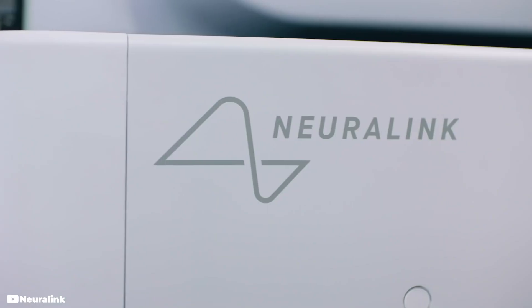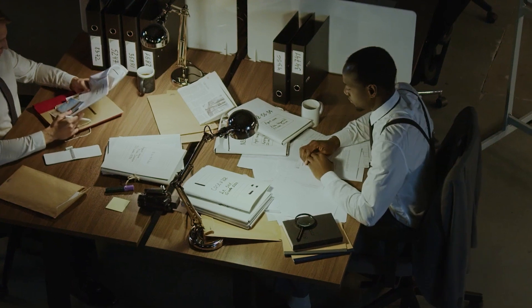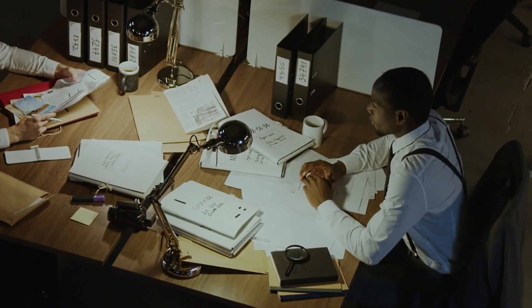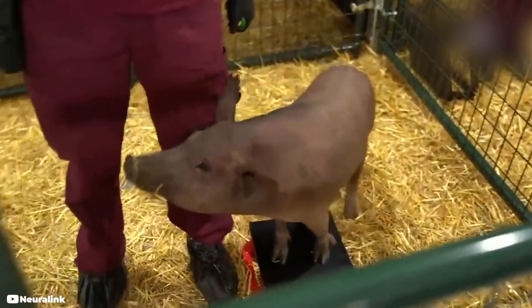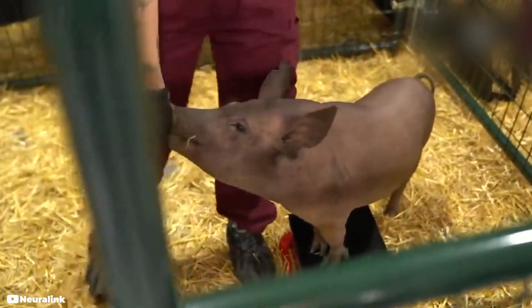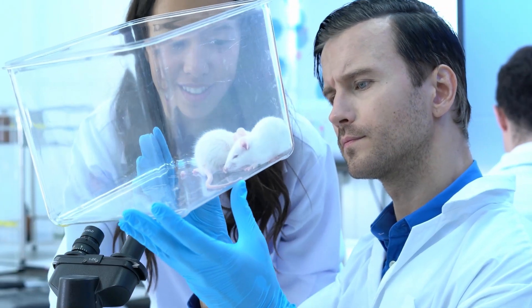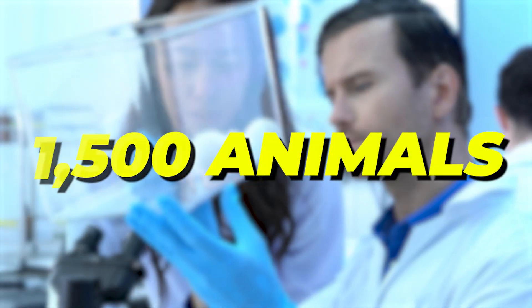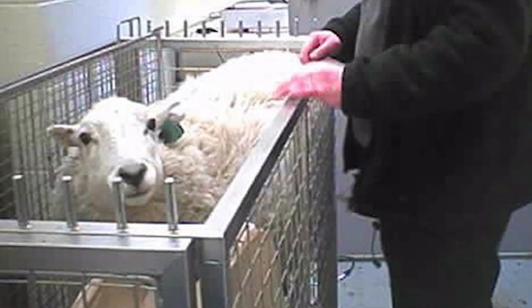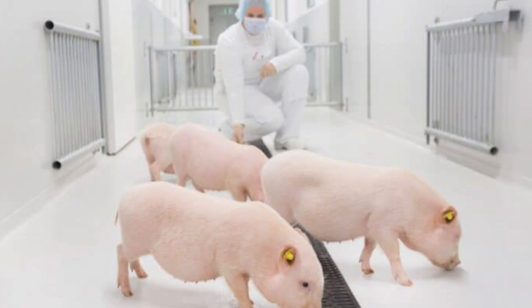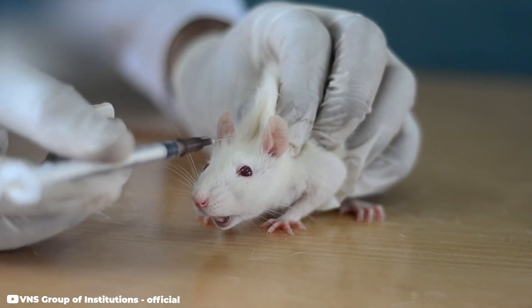Neuralink, Elon Musk's neurotechnology company, has been under federal investigation for potential animal welfare violations related to its animal testing practices. Elon Musk's brain chip company, Neuralink, has come under the federal investigation. The company is facing probe for potential animal welfare violations. The company has tested on and killed at least 1,500 animals since 2018, including over 280 sheep, pigs, and monkeys, as well as mice and rats.